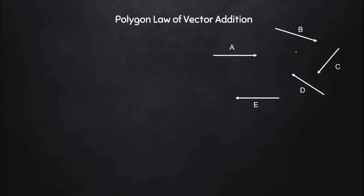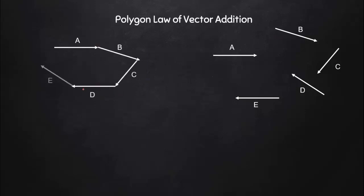Suppose you are given random vectors a, b, c, d, e — five vectors. I place the first one, then place the tail of b at the head of a, then place c after b, then d, then e. So this open polygon is formed with five sides.